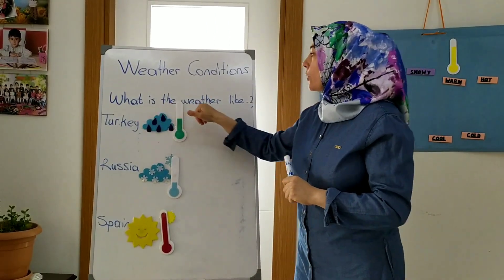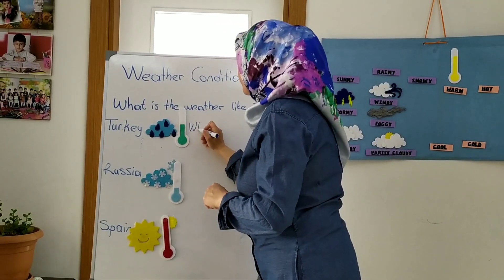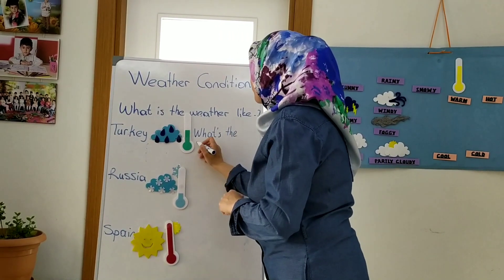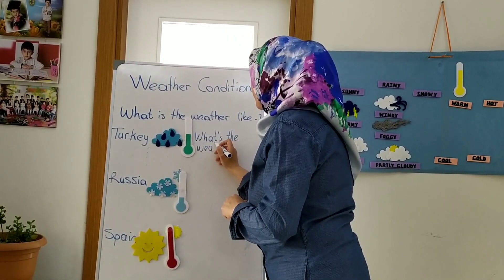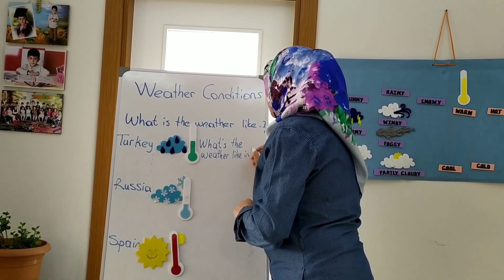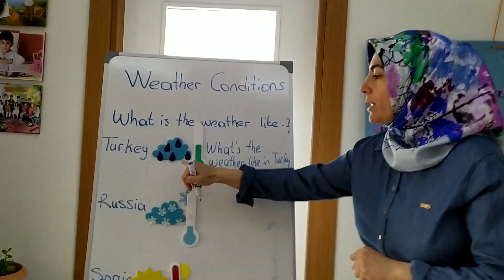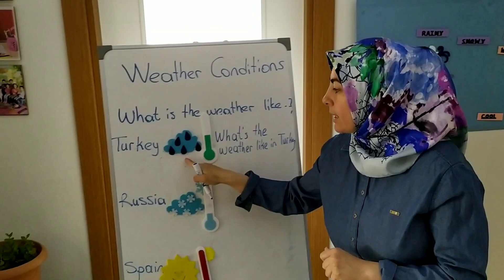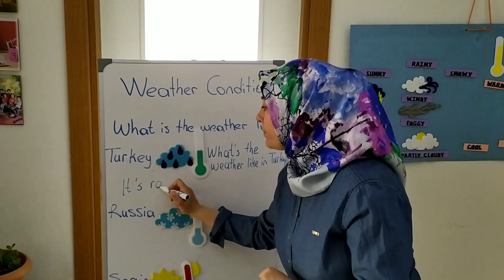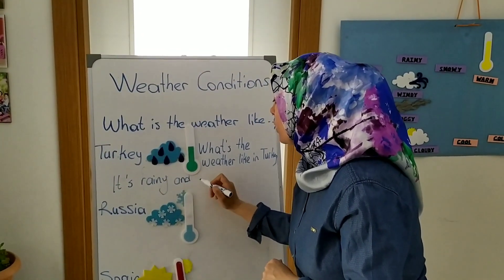What is the weather like in Turkey? Look at the pictures. The answer is: it is rainy, sunny, and cool.